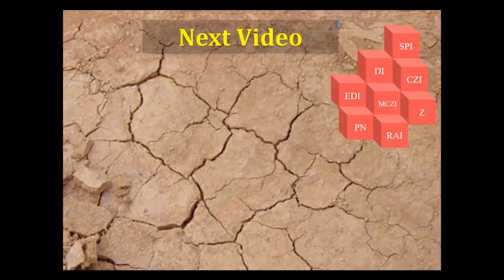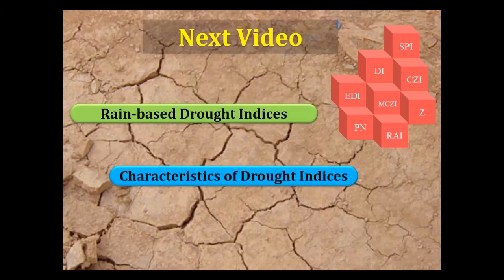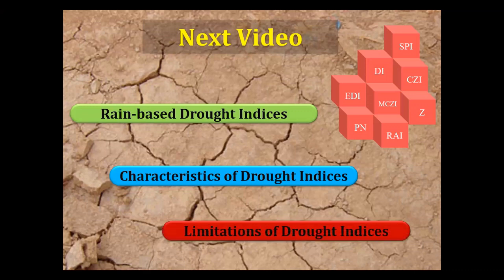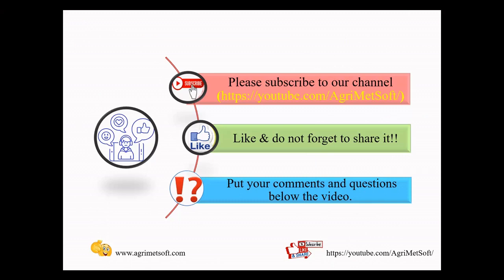In the next video, we will focus on rain-based drought indices. I will show the equations, characterization, and limitations of meteorological rain-based drought indices. Please subscribe to our channel, hit the thumbs up button, and put your comments and questions below the video — it would be helpful for me to know your demands. I hope to see you in the next video. Have a good time, bye bye.